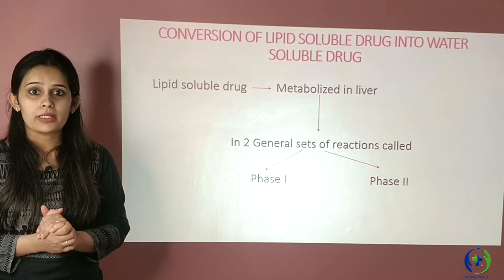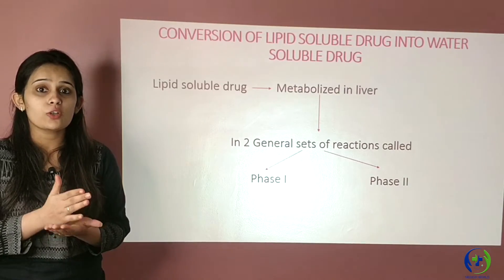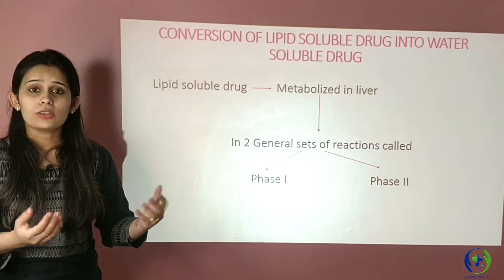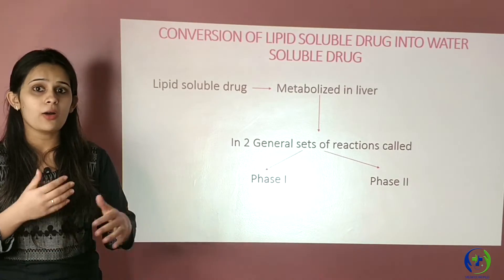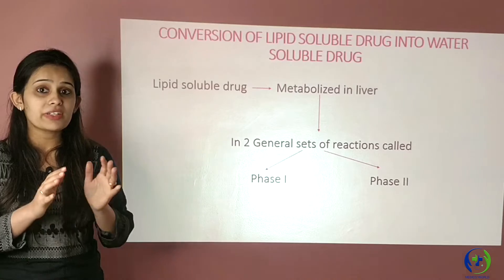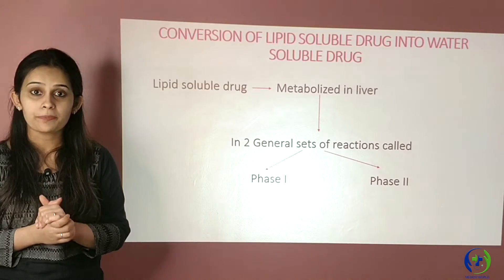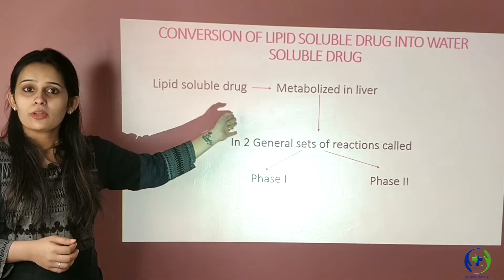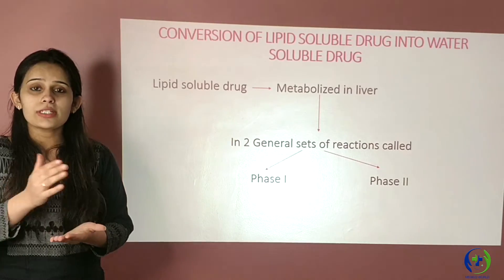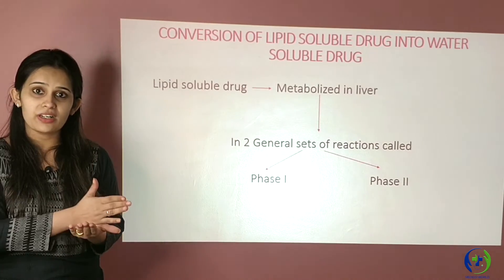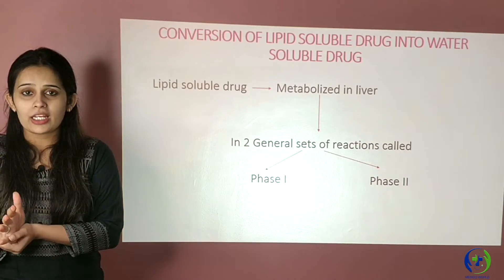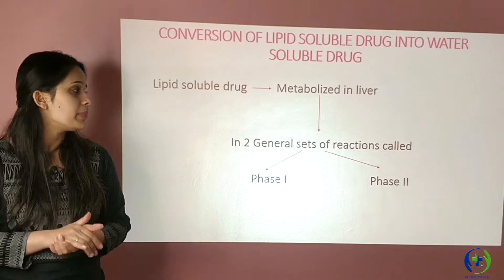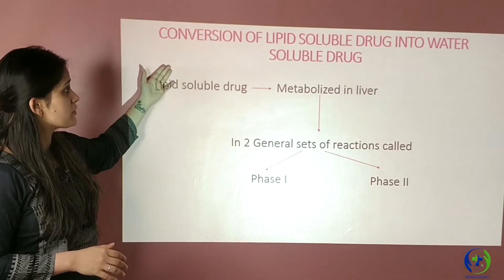Now we come to the main topic: the conversion of lipid-soluble drugs into water-soluble drugs. Where does this happen? It happens in the liver — the liver is the main organ of metabolism. These lipid-soluble drugs are metabolized in the liver in two sets of reactions: Phase 1 reaction and Phase 2 reaction. It's a bit complicated, but let's learn it in a simple manner.